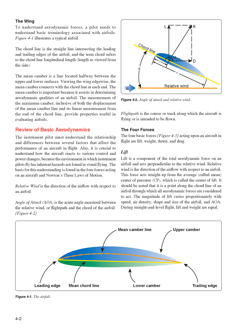Relative wind is the direction of the airflow with respect to an airfoil. Angle of attack (AOA) is the acute angle measured between the relative wind, or flight path, and the chord of the airfoil. Flight path is the course or track along which the aircraft is flying or is intended to be flown.